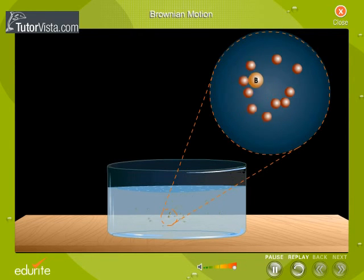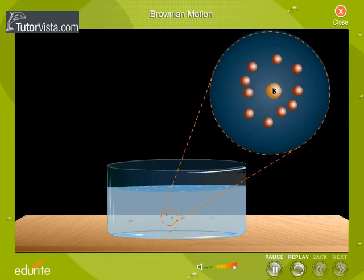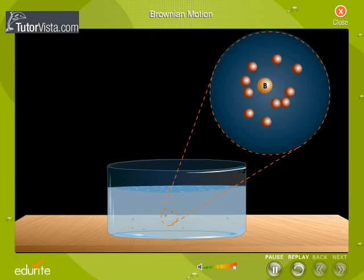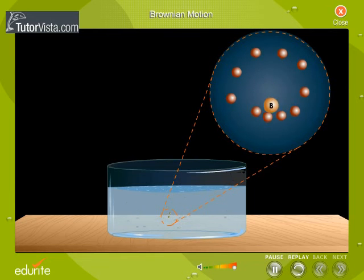Now observe the particle B, which is very small. We observe that the number of molecules hitting B is less and is not hit equally from all sides. As a result, there is a resultant force. This resultant force alters the direction of the particle. As this particle moves, the direction of the resultant force changes. This results in a zigzag motion.